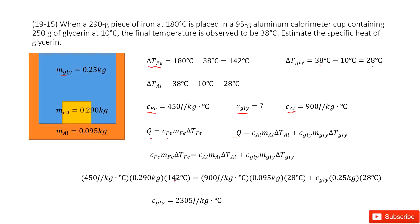Input all the known quantities inside. The only unknown quantity is the specific heat for glycerin. Solve it, and you get the answer as 2305. Thank you.